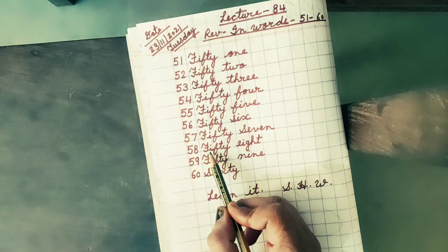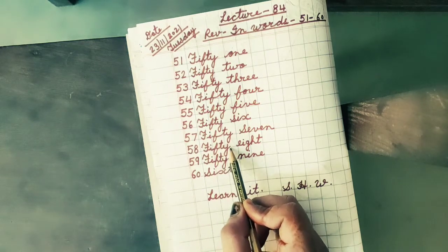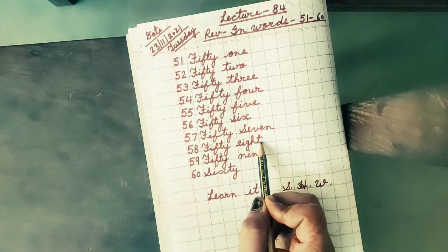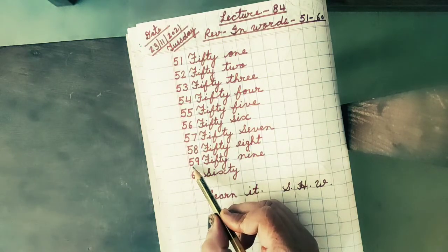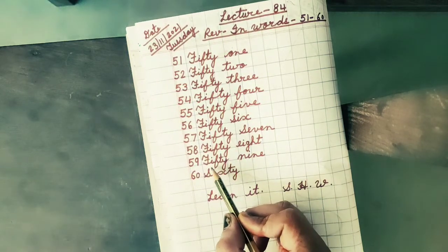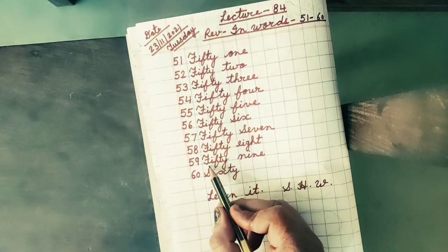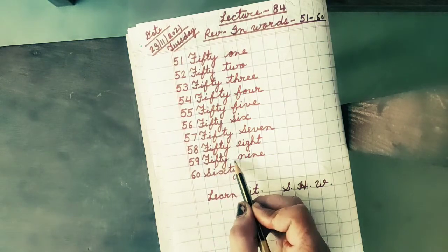Next spelling is 59. The spelling of 59 is F, I, F, T, Y, 50, N, I, N, E, 9.